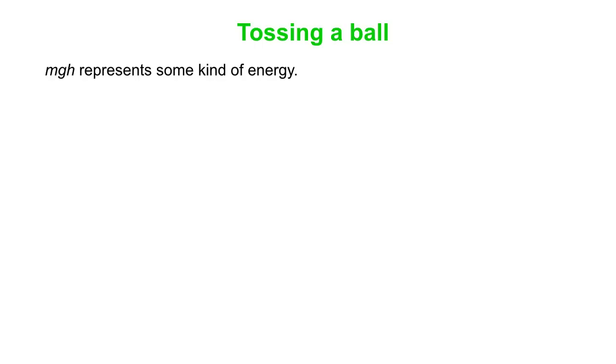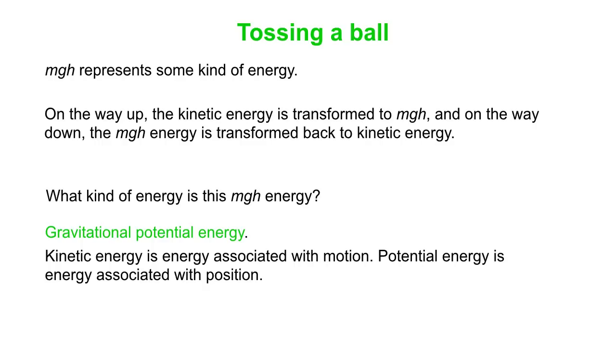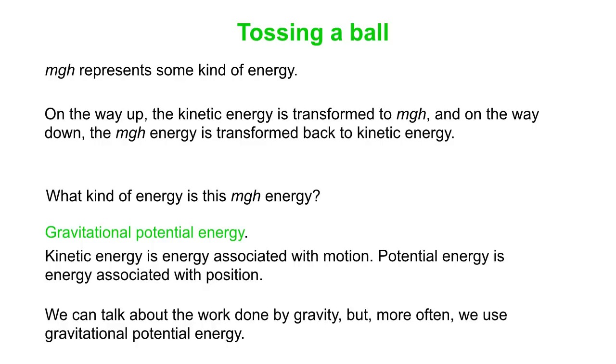MGH represents some kind of energy. On the way up, kinetic energy goes into MGH. On the way back, MGH comes out, goes back to kinetic energy. What kind of energy do we call this? We call this gravitational potential energy. Kinetic energy is energy associated with motion. Potential energy is energy associated with position. We can talk about the work done by gravity, but more often we use gravitational potential energy, and we'll talk more about that in upcoming videos.